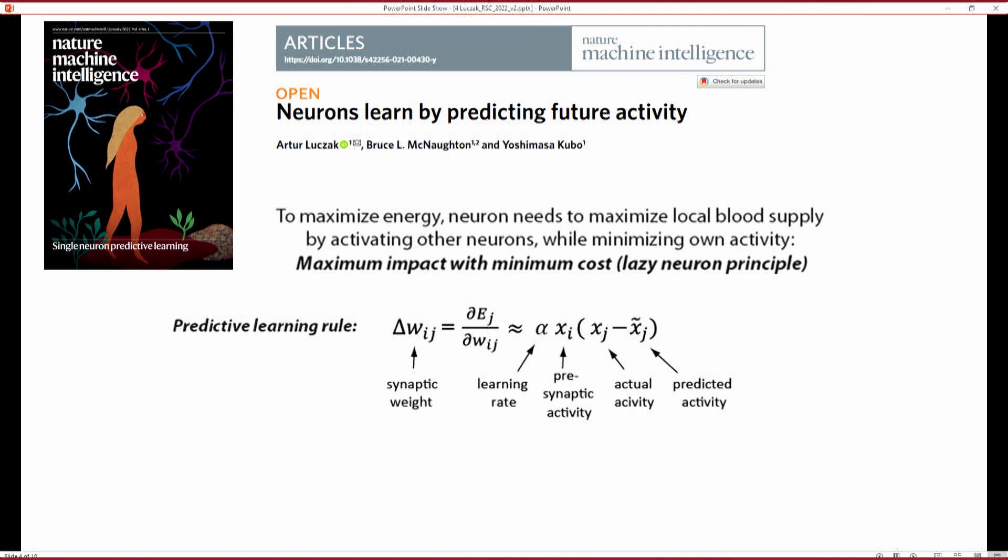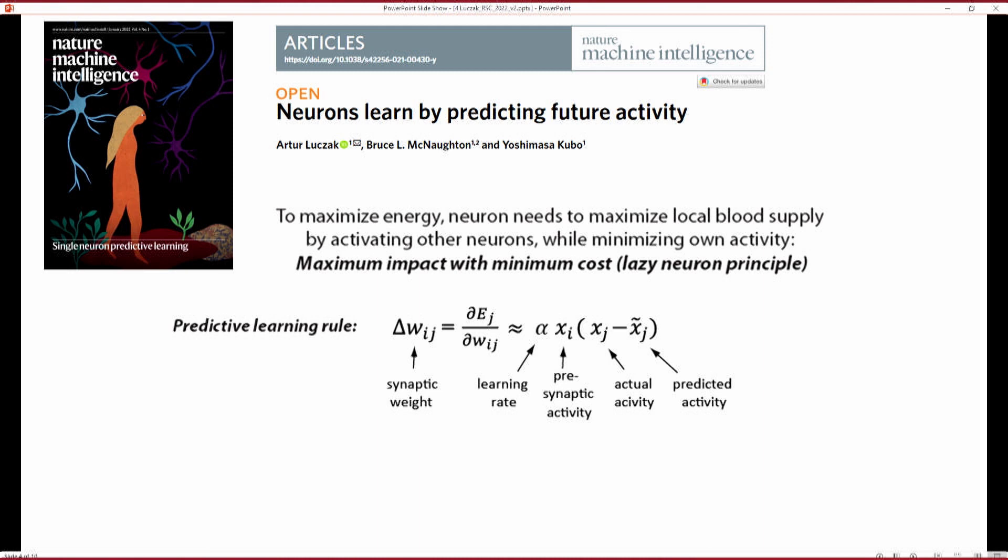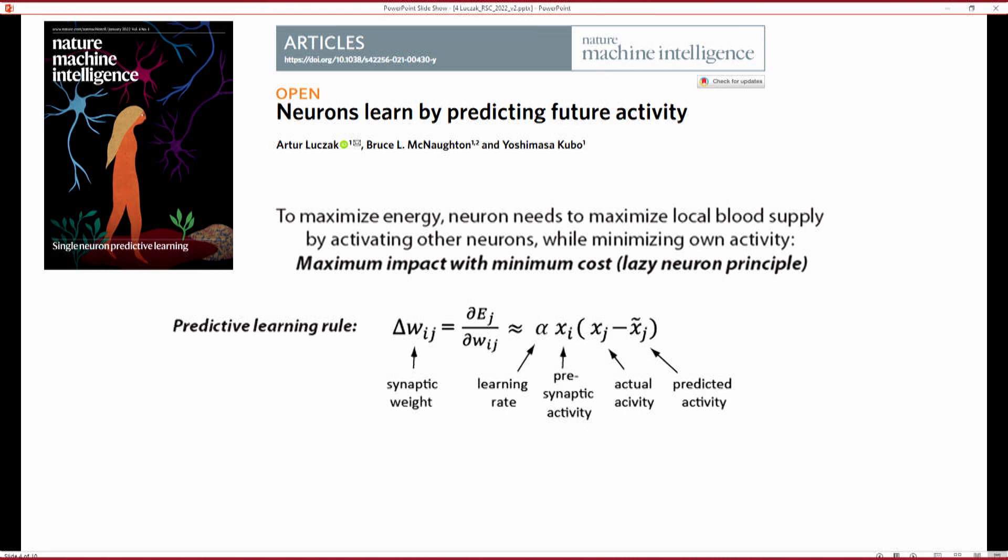And don't worry about this equation. It just says that to modify those synaptic changes, what neuron really needs to do is to compare the level of activity currently with this, what predicts. So neuron has to be this little predictive machine, has to predict what activity I will have in next 10, 20 milliseconds, and later compare, is this activity exactly as predicted? And if not, it can, based on this difference, we'll adjust synapses.